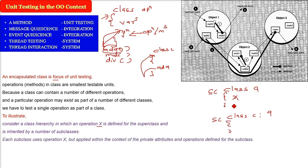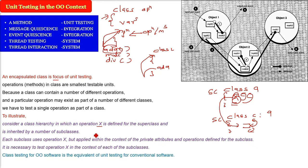So each subclass uses this operation x. But this operation x or function x or method x, this is applied within the context of private attributes and the operation defined for the subclass. So this function, same function in both of these classes will behave or work differently. So it is necessary for us to test this operation or a function in the context of each of the subclasses.